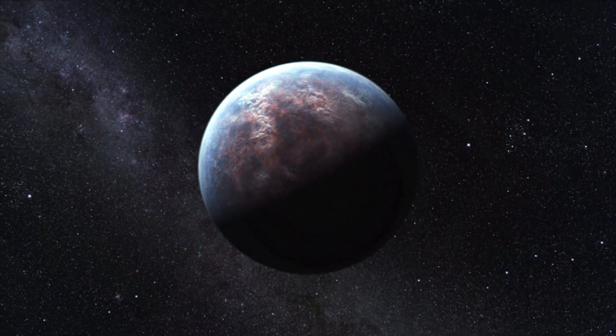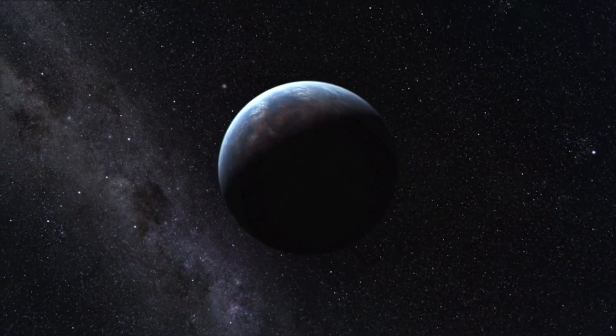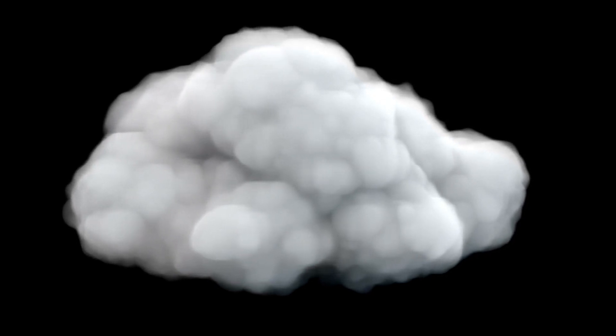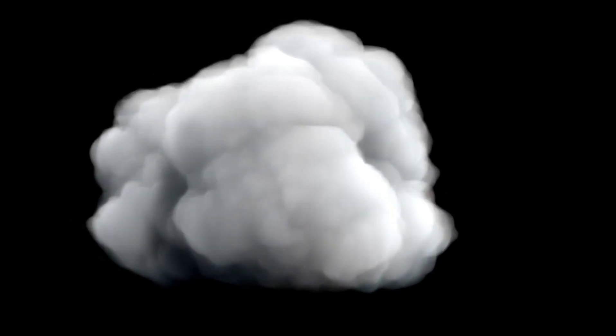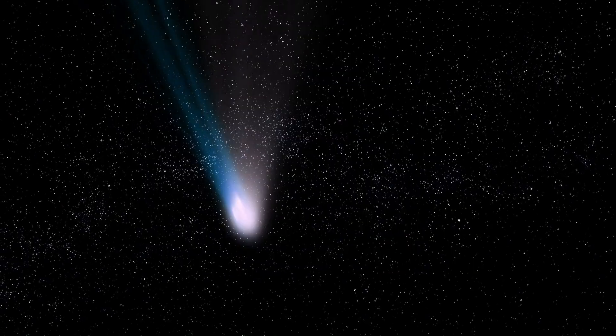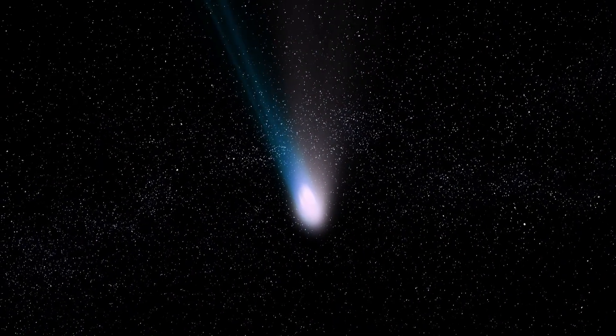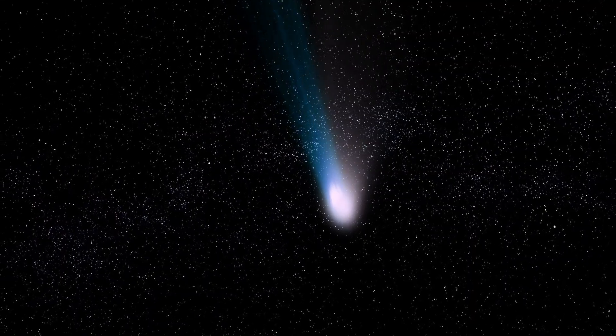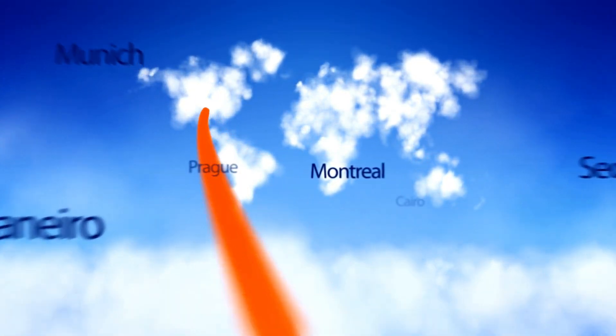Beyond the Kuiper belt lies the hypothetical Oort cloud, a spherical shell of icy bodies that marks the solar system's outer boundary. This distant region is thought to be the source of long-period comets, which occasionally journey into the inner solar system. The Oort cloud remains unobserved, existing only as a theoretical construct, but it represents the final frontier of our solar neighborhood.